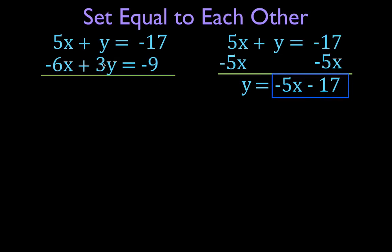Now we're going to solve the other equation for y as well. You have to notice that all the coefficients in this equation are multiples of 3 — there's a 3 in front of y, then minus 6x, and minus 9. That means I'm going to take this whole equation and divide all three terms by 3. Then I'll be left with y. Minus 6x divided by 3 is minus 2x. Plus 3y divided by 3 is just y. Equals minus 9 divided by 3, which is minus 3.